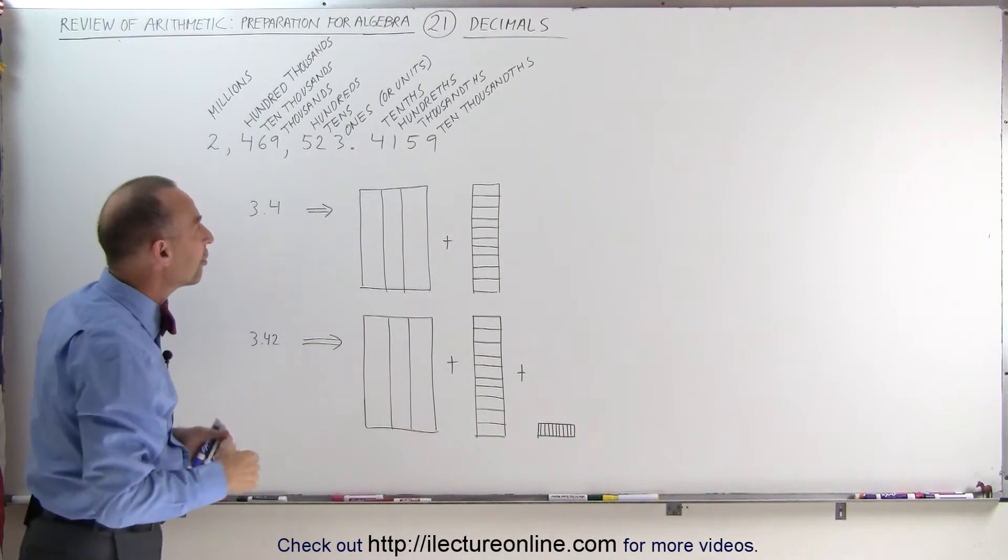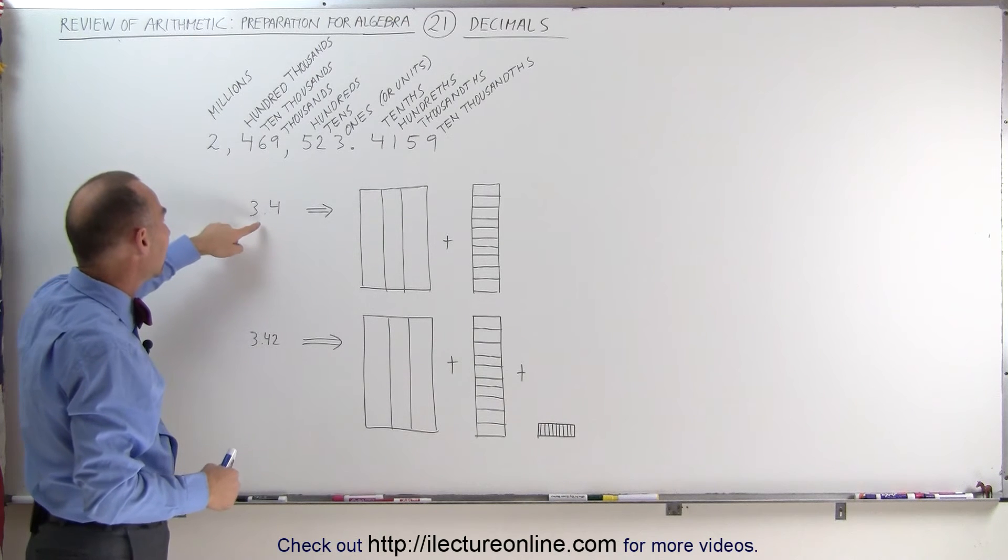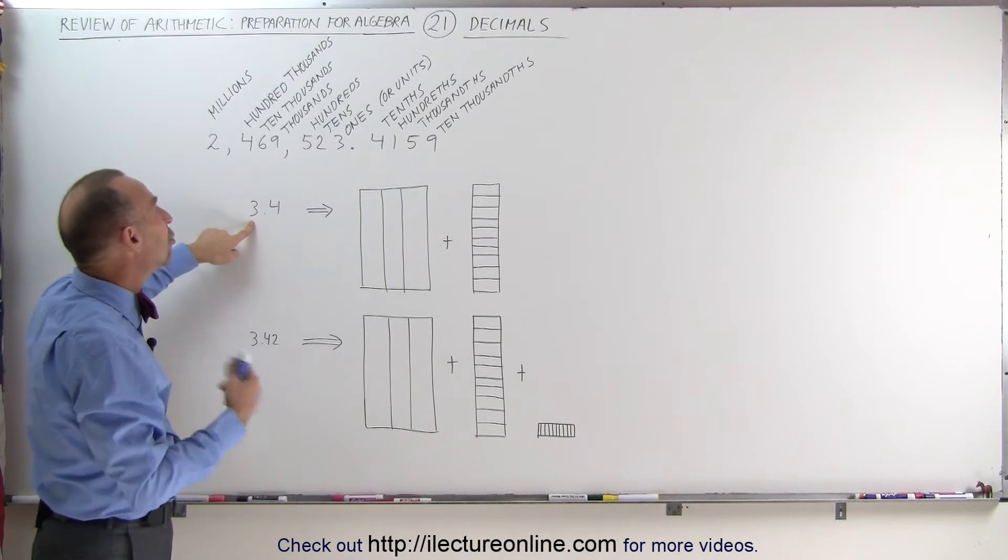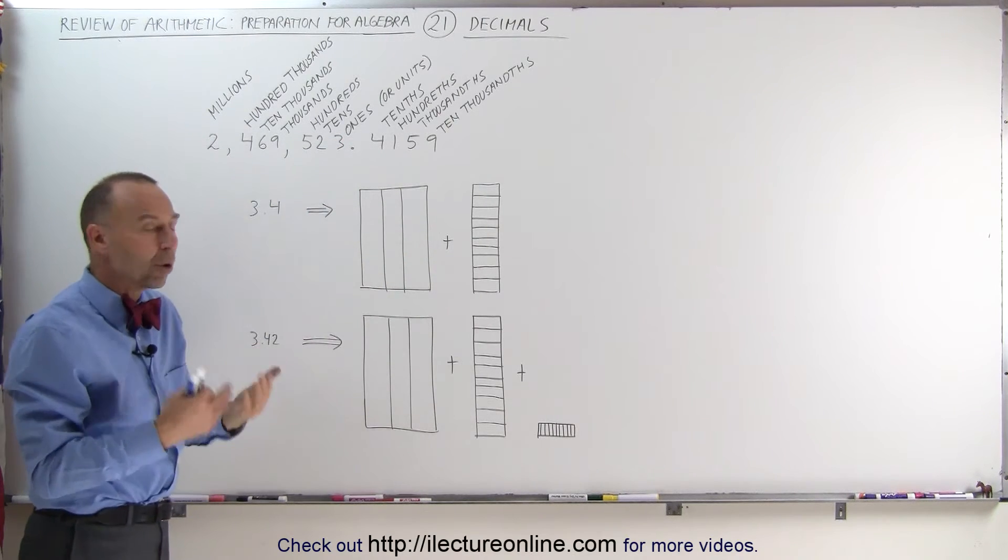So we do say five one-thousandths. To get a better concept of a decimal, here we have the number 3.4. 3 represents how many units you have, or how many ones you have. There's 3 of them, you have 3 whole units.